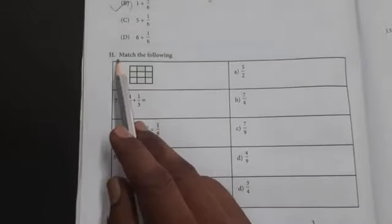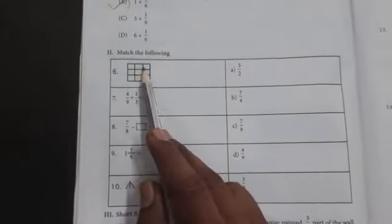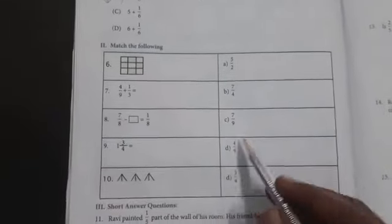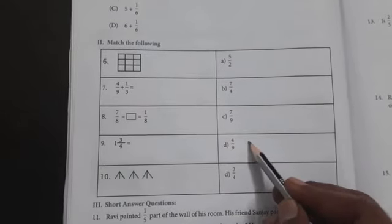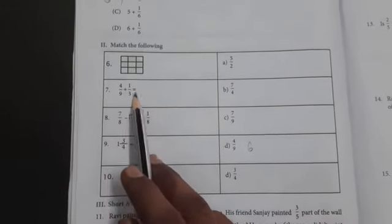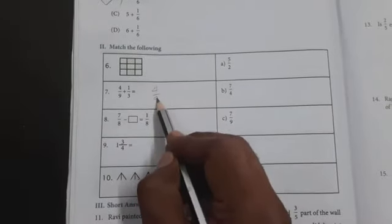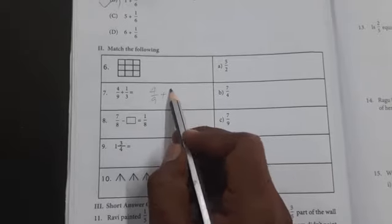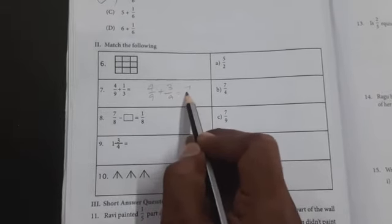Next, Roman numeral two, match the following. Shaded portion: one, two, three, four. Total is three into three equals nine. So four by nine. Number six: four by nine. Seven: one, four by nine plus one by three. LCM is nine, so four by nine plus three by nine equals seven by nine. Option C, seven.